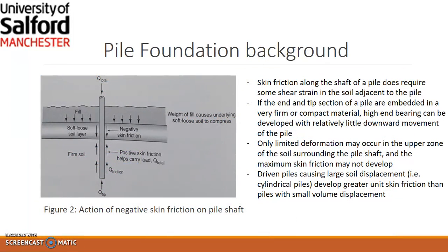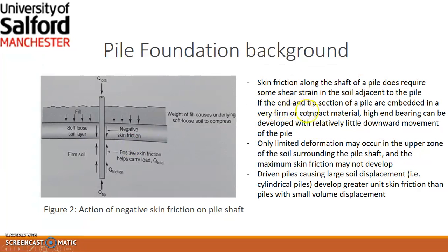The basic background on pile foundations: Figure 2 shows the action of negative skin friction on the pile shaft. It shows the forces that act around the pile when you have soil inside — Q at the top is the load being applied on the pile. It shows negative and positive friction which helps to carry the load, where positive friction helps the pile carry the load. If the end and tip section of the pile are embedded in a very firm or compact material, high end bearing can be developed with relatively little downward movement. The material type and stiffness of the soil into which the pile is driven is very important as it contributes to the end bearing and movement of the pile.